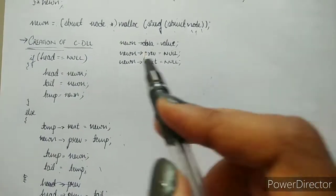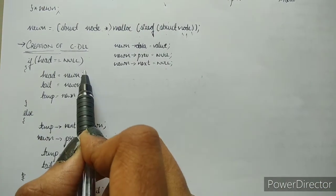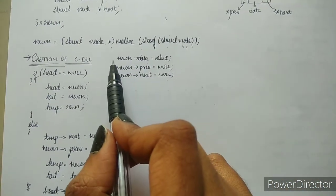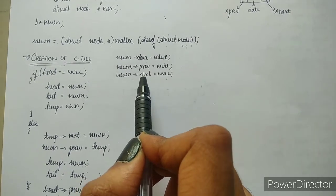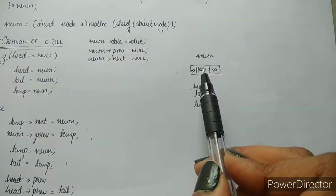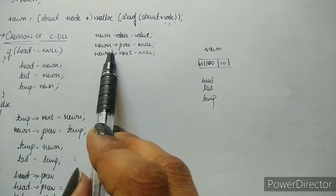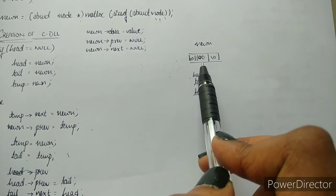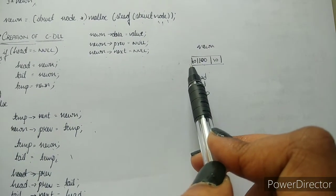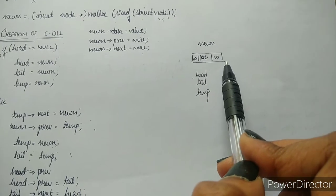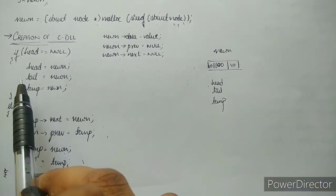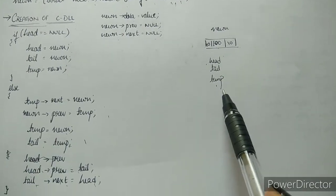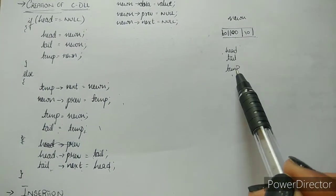Now let's see how it works. If head is equal to null, it implies that the list is empty and you just have this node with which you are going to form a linked list. A new node is created with data value 100, and the previous and next fields are null. You make new node as head, tail, and temp — it's a temporary node.